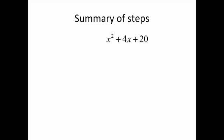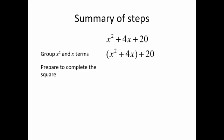First, we'll do the example that we did in the first video: x squared plus 4x plus 20. The first thing we did was we separated out the x squared and 4x terms, so we'll group those together. We then prepare to complete the square by leaving an empty space in the x squared plus 4x, just like we had the lower right-hand corner of that square, and we leave a space on the right to represent the pieces we're going to take from the block of unit squares on the right.